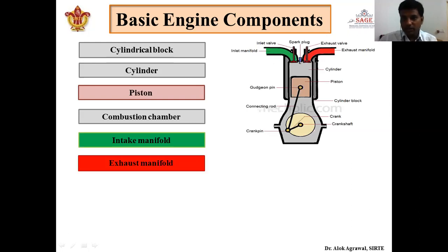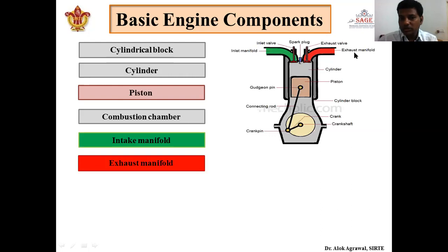Next is the exhaust manifold. After combustion is completed, there will be waste gas — we call this the exhaust gas. To remove this exhaust gas from the cylinder, we use the exhaust manifold. This is again a pipe which is used to remove the exhaust gases, the waste gases, from inside the cylinder to the outside atmosphere.